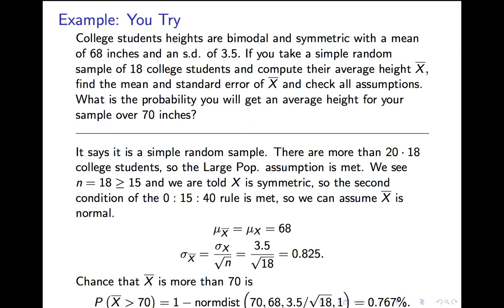All right, let's go through it. It says it's a simple random sample. That assumption is met. There are more than 20 times 18 college students, so the large population assumption is met. n is 18, that's more than 15, and we're told that X is symmetric. So version 2 of the 0-15-40 rule is met. So we can assume x-bar is normal. That means the mean of x-bar is 68. The standard error of x-bar is 3.5 over the square root of 18, which is 0.825. So the probability that x-bar is more than 70 is 1 minus normdist of 70 comma 68 comma 3.5 divided by square root of 18 all comma 1, close parentheses, and that works out to just under 1 percent, 0.767 percent.